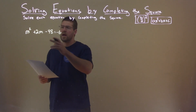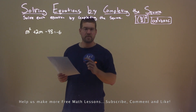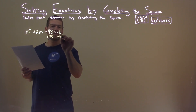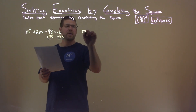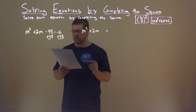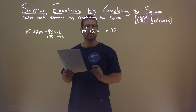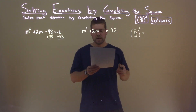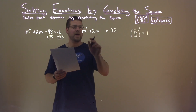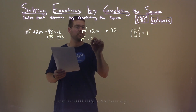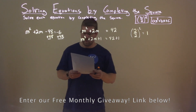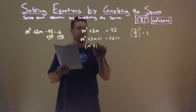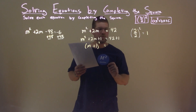We're given this problem right here: m squared plus 2m minus 48 equals negative 6, and we need to solve this by completing the square. First thing I want to do is add 48 to both sides, giving us m squared plus 2m equals negative 6 plus 48, which is 42. I'm now going to look at my B value, which is 2. Dividing by 2 and squaring it comes out to be 1. So I'm going to add 1 to both sides: m squared plus 2m plus 1 equals 42 plus 1. The left-hand side is a perfect square — m plus 1, squared — equal to 43.